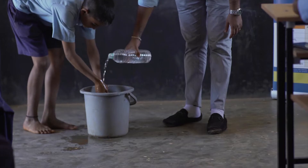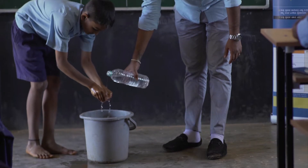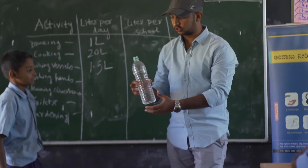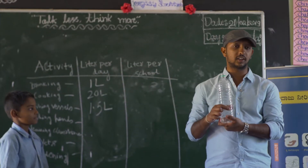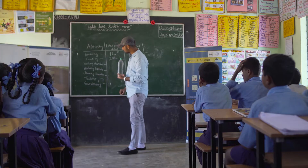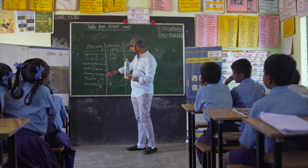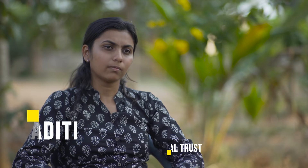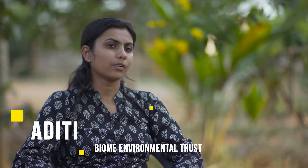Usually in the second session we make the students calculate the water demand for the school. Depending on their roof areas, we make the students calculate what is the amount of rainwater they can actually collect from their schools and how much it can offset their actual water demand in the school.